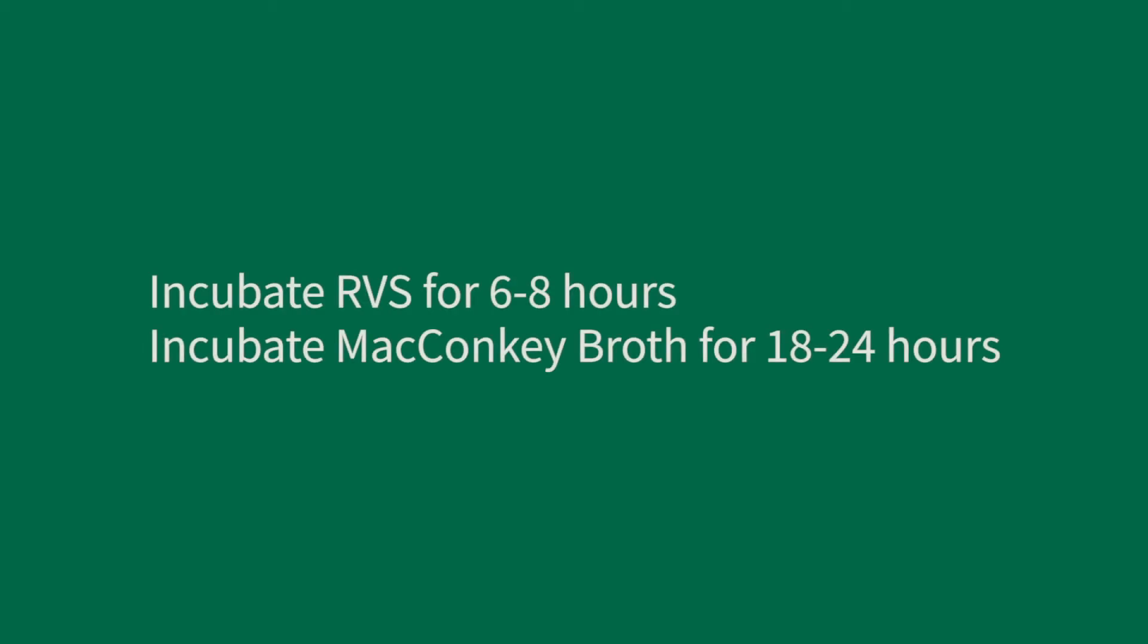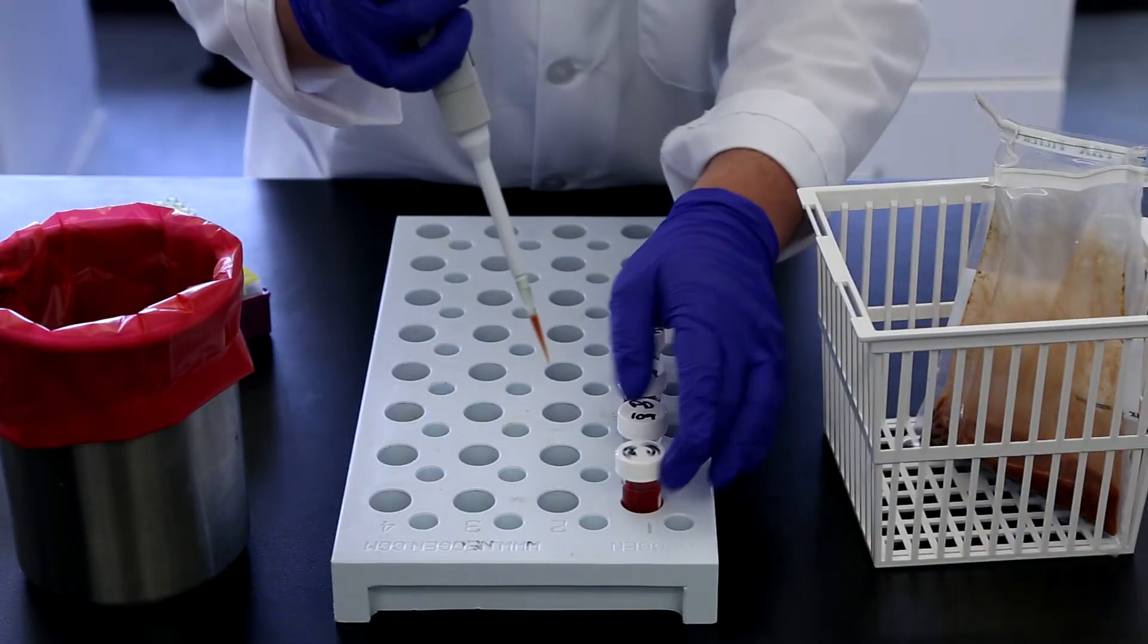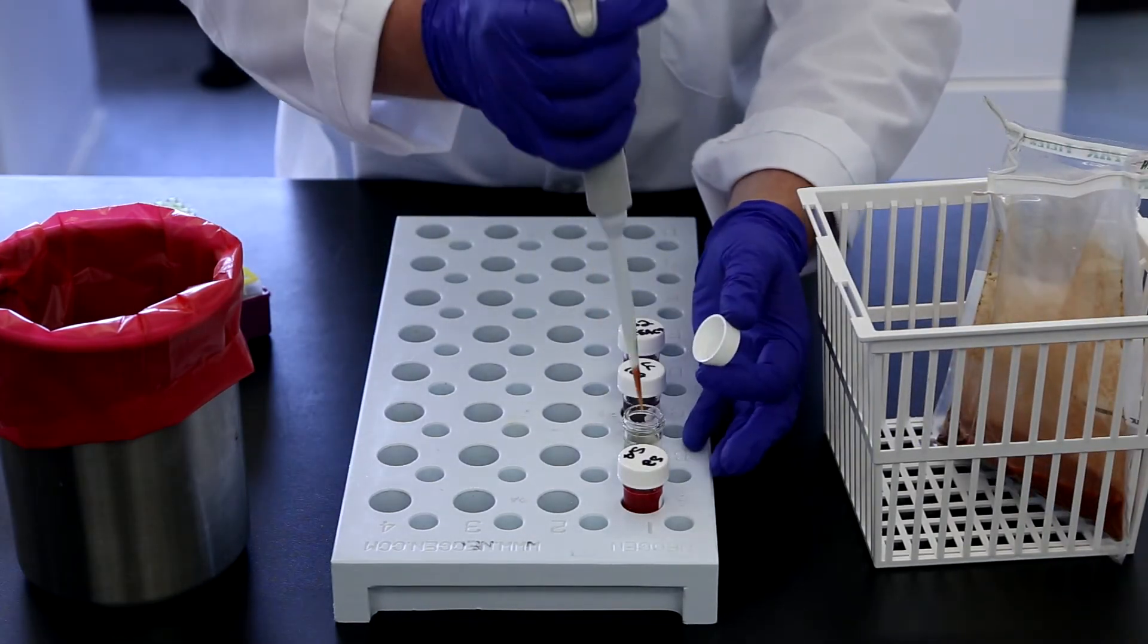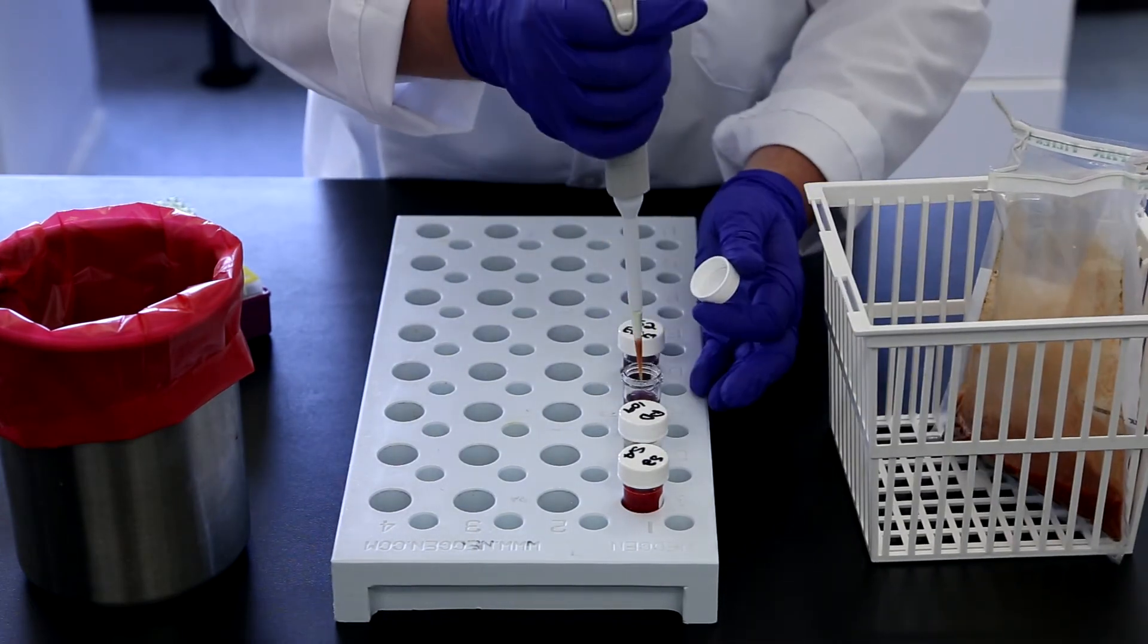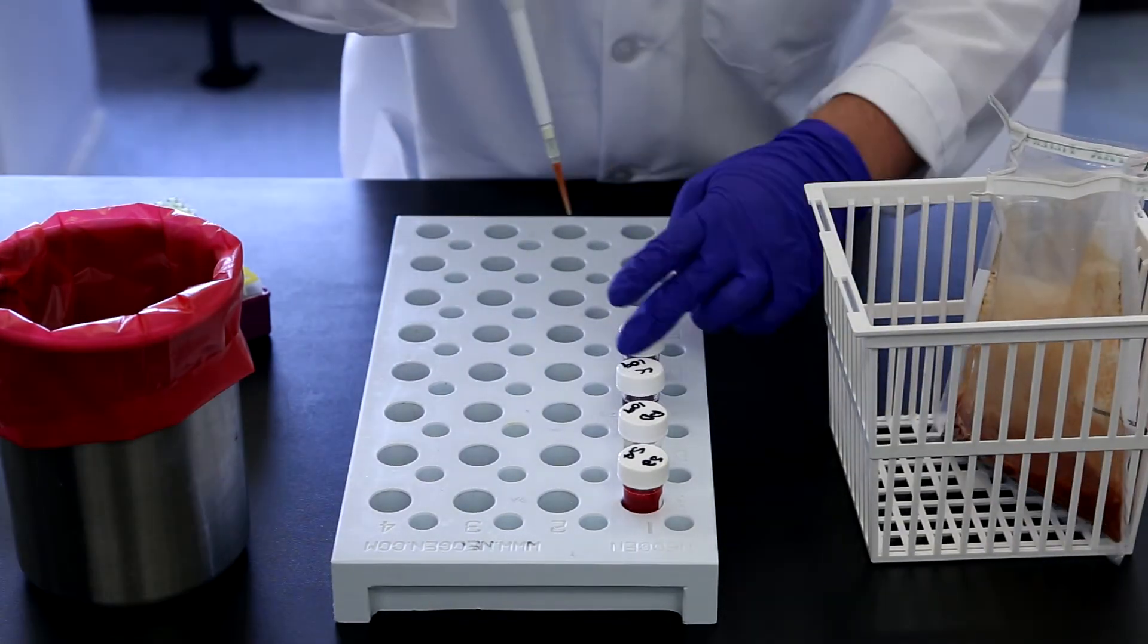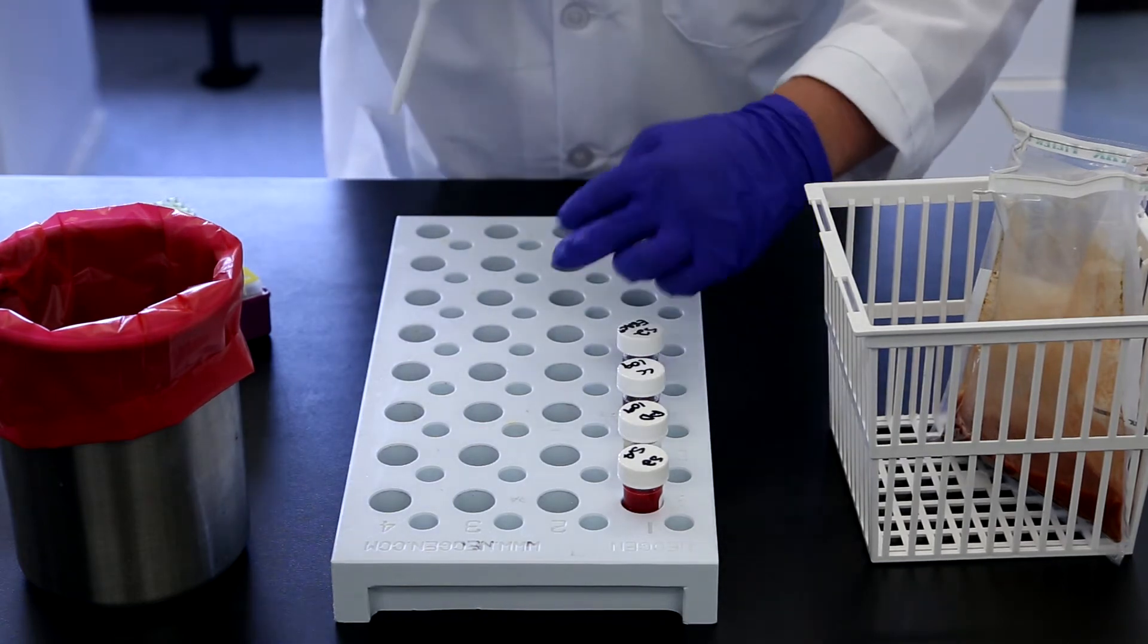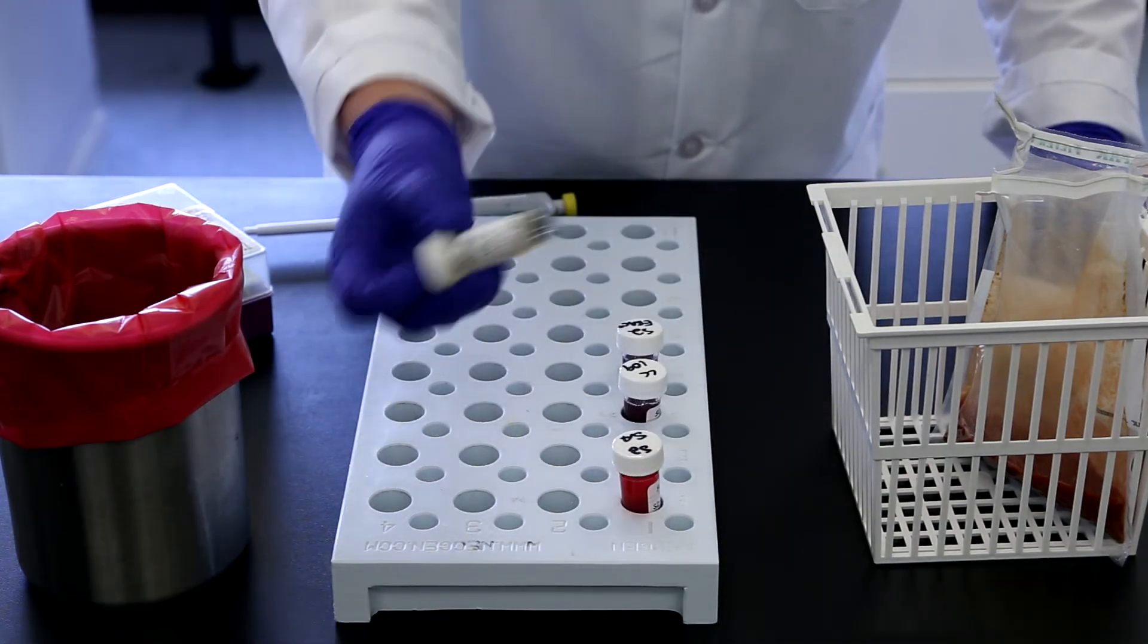Incubate RVS for 6-8 hours and McConkie broth for 18-24 hours. For S2SA, PD109, CC109, and S2EBAC9, transfer 0.1 milliliters from the overnight 1-10 dilution sample vessel to the respective vials. Only inoculate vials necessary for your testing purposes. Gently invert vials three times and place back into vial rack.